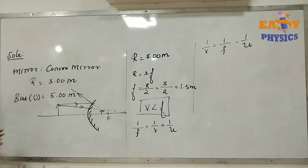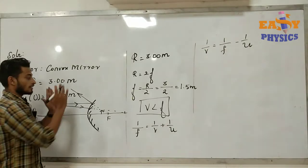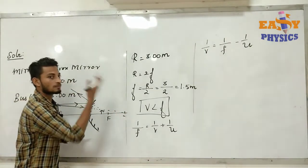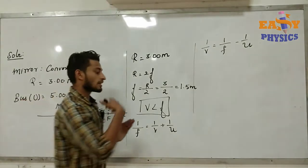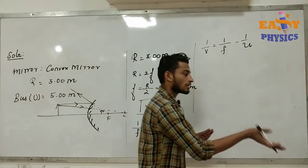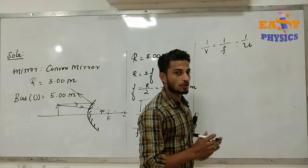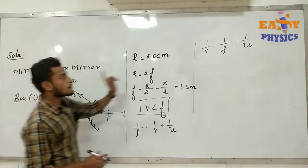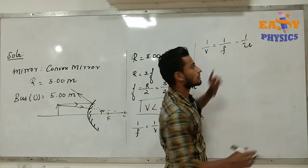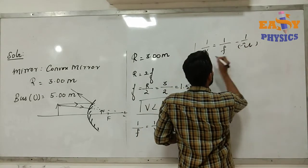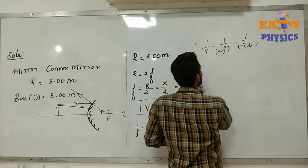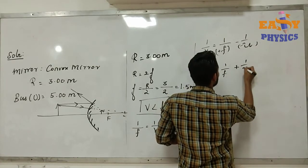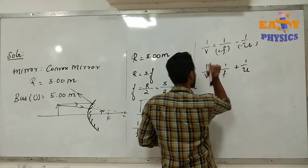Now we apply the sign convention. The mirror is the reference point. The left side is negative, so the object distance is negative. The right side is positive. Using the sign convention, the relation becomes 1 by f plus 1 by u.